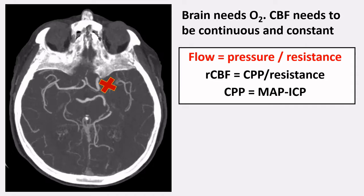We need a continuous cerebral blood flow. What determines cerebral blood flow in the brain? It's determined by the pressure divided by the resistance — specifically, the cerebral perfusion pressure divided by the resistance. Cerebral perfusion pressure is calculated as the mean arterial pressure minus the intracranial pressure. What you have to remember is that flow equals pressure divided by resistance.